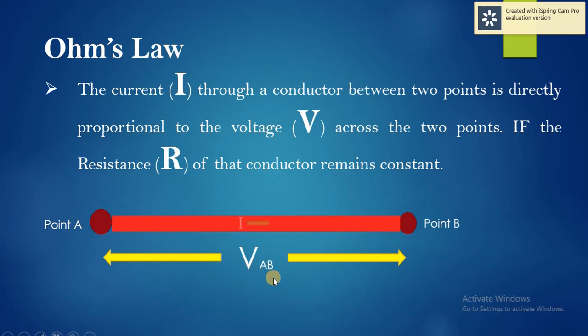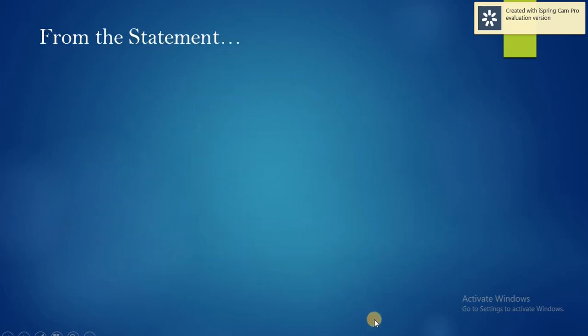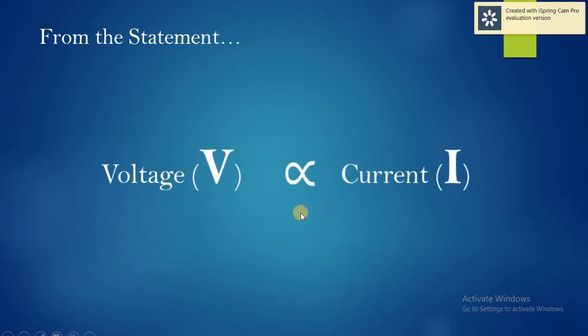This is the conductor and current I is flowing through this conductor. From the statement, current is directly proportional to voltage V and R is the constant of proportionality.